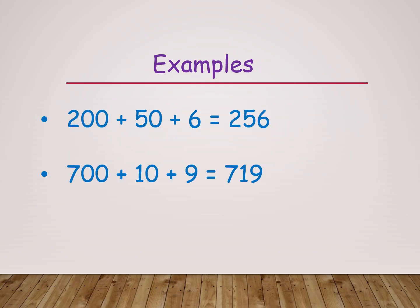Here this is the big value, means expanded form. 200 plus 50 plus 6. What is this in short form? 256. Here also 700 plus 10 plus 9. This is the big value, that it becomes 719. Okay kids, next.